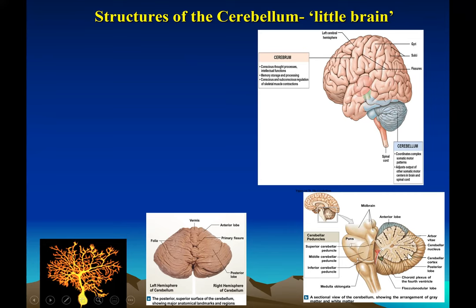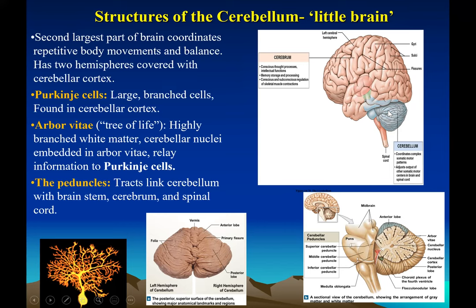The peduncles are tracts within the brainstem connecting to the cerebrum and spinal cord. The main function of the cerebellum is to coordinate complex somatic motor patterns and maintain balance. It coordinates repetitive motion. When you get drunk, it's the cerebellum that is affected — that's why an intoxicated person loses balance and staggers.